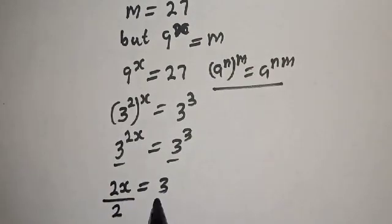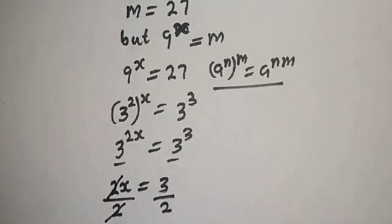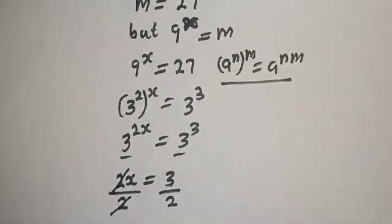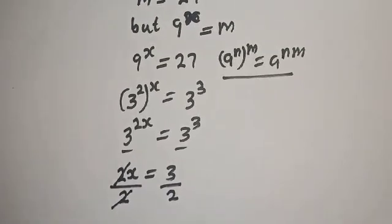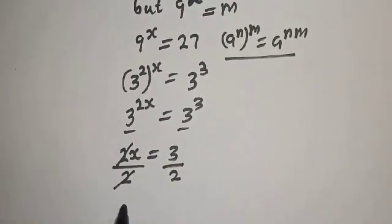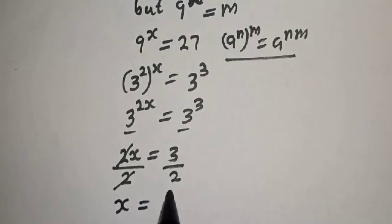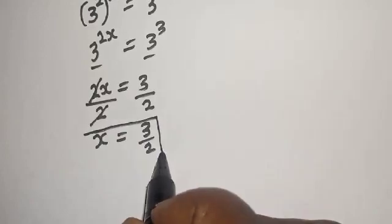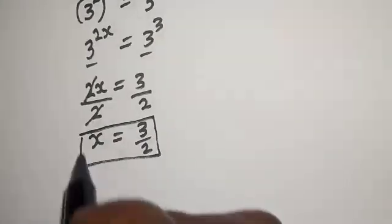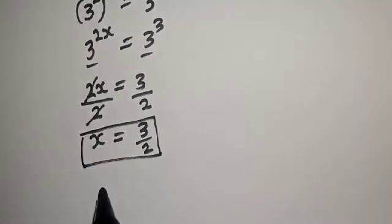Since 2s equals 3, let's divide both sides by 2. This will cancel, giving s is equal to 3 over 2. This is the final answer. We can check to confirm if our answer is right or wrong.